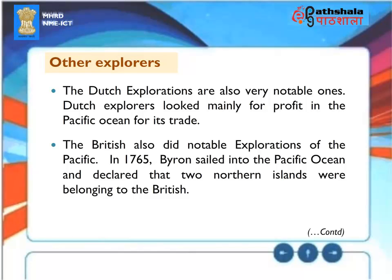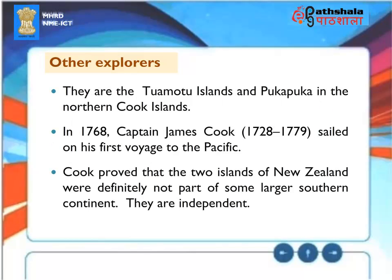Other Explorers: The Dutch explorations are also very notable, as Dutch explorers looked mainly for profit through Pacific trade. The British also conducted notable explorations. In 1765, Byron sailed into the Pacific Ocean and declared that two northern islands — the Tuamotu Islands and Pukapuka in the northern Cook Islands — belonged to Britain. In 1768, Captain James Cook (1728–1779) sailed on his first voyage to the Pacific and proved that the two islands of New Zealand were not part of some larger southern continent, but were independent.